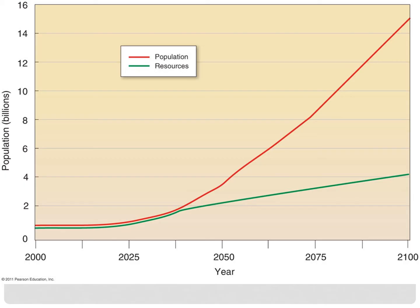Malthus believed that population growth would exceed the food supply, leading to some kind of check, as he called it, on the population. These checks would be things that brought population back into balance with the food supply — disease, famine, starvation, and war would be the outcomes of overpopulation, leading to a population crash. And this cycle would repeat itself over and over again.